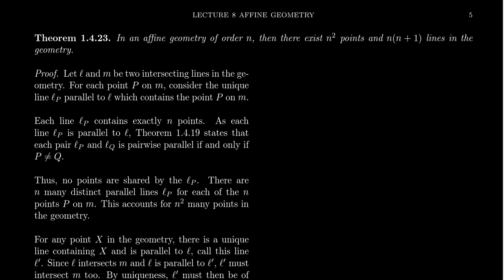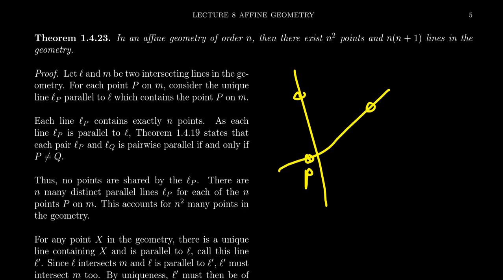Now we want to prove these results generalize to any affine geometry of order n. We take two lines that intersect each other. Why must two such lines exist? Incidence geometry guarantees three non-collinear points; fixing one point P, the line determined by two of those points and the line determined by the other two gives us two intersecting lines.